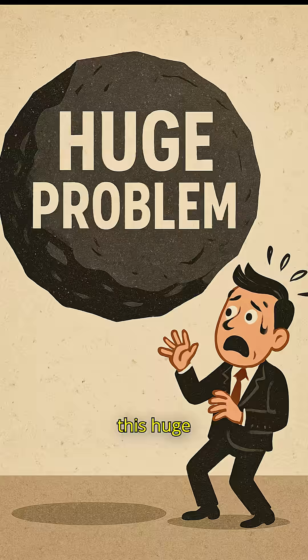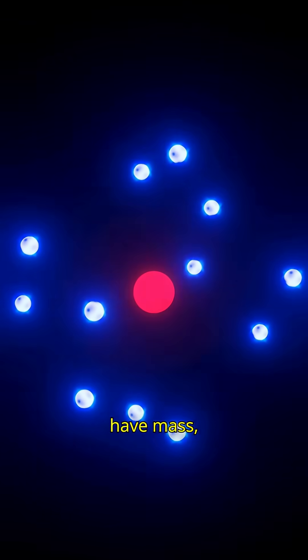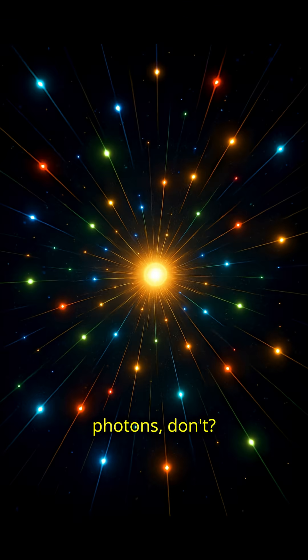Back in the 1960s, physicists had this huge problem. Why do some particles, like electrons, have mass, while light particles, photons, don't?